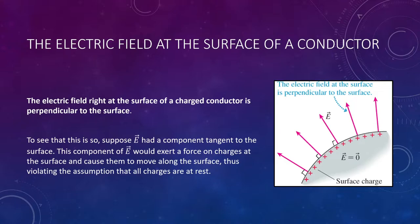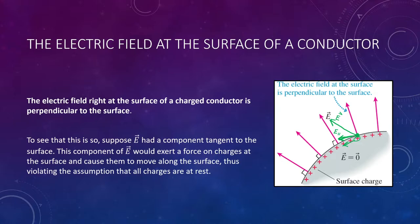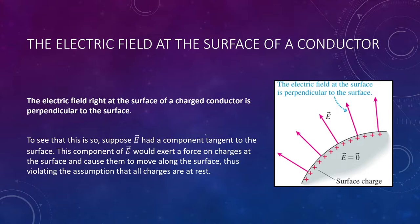Let's think about it another way. Suppose there is an electric field line that for some reason isn't pointing straight off the surface. If that were the case, it would have a component parallel to the surface — call it E-parallel. That parallel component would take a positive charge and force it along the surface, meaning it would be moving, which violates electrostatic equilibrium. So there can't be an electric field that isn't perpendicular to the surface.